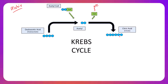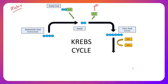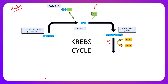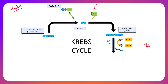Once we form the six-carbon citric acid — which is why this cycle is also called the citric acid cycle — the citric acid will be oxidized by NAD+. NAD+ comes in and converts into NADH by taking two electrons and a hydrogen ion from citric acid. Once NADH is made it will head to the ETC, like all other NADH made throughout aerobic cellular respiration. Through the process of oxidizing the citric acid we will also produce a CO2.